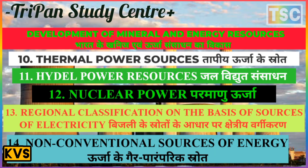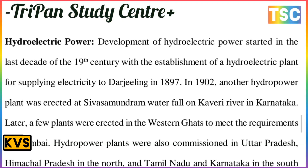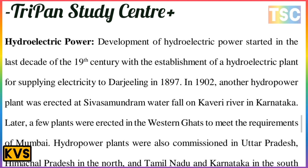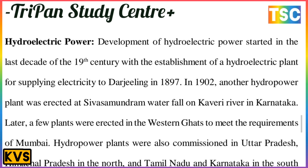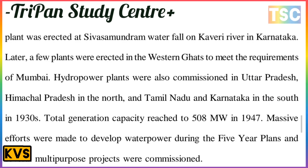Development of hydroelectric power started in the last decade of the 19th century with the establishment of a hydroelectric plant to supply electricity to Darjeeling in 1897. In 1902, another hydro power plant was created at Sivasamudram waterfall on the Kaveri River in Karnataka. A few more plants were erected in the Western Ghats to meet the requirements of Mumbai.